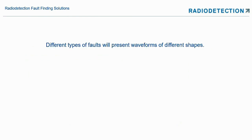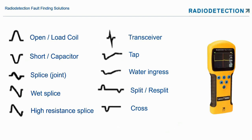Different types of fault will present waveforms of different shapes. We could have an open circuit, a short circuit, a splice or joint, a wet splice where we've got some water, a high-resistance splice with corrosion, a transceiver, a tap where someone has tapped into the line — normally we're looking for illegal taps — water ingress into the cable, a split, a re-split, or a cross where two cables are very close together.